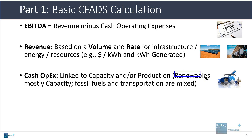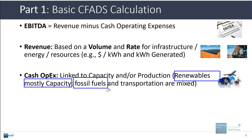With cash operating expenses, these are typically linked to either capacity or production, or a mix of both. With renewables like solar and wind, most expenses are going to be capacity-related, though there may be some production-related expenses as well. When dealing with coal, natural gas, or nuclear plants, you'll see more of a mix — some expenses depend on capacity, others like fuel depend on production.